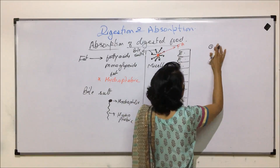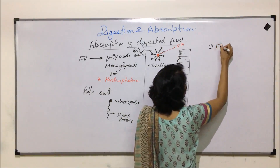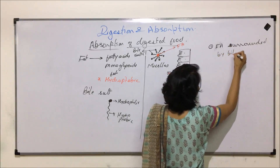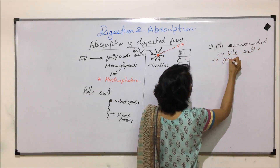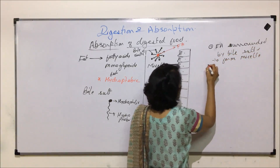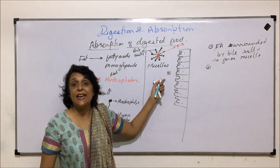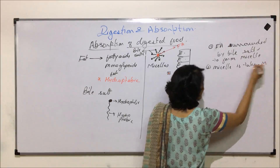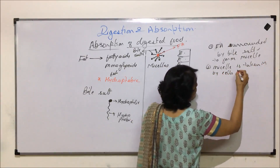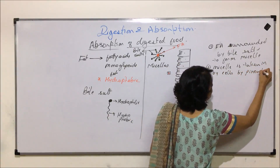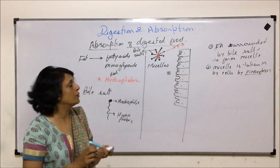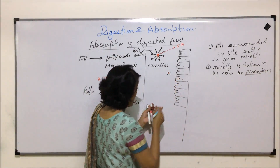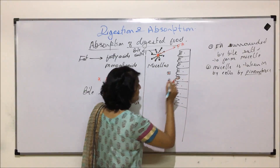Step one: fatty acid is surrounded by bile salts to form a micelle. Step two: the micelle is taken in by cells by the process of pinocytosis, where the cell surface makes a cup-like structure and this particle is taken in. So now this micelle is actually going in.